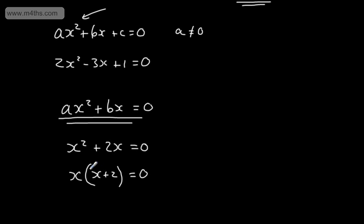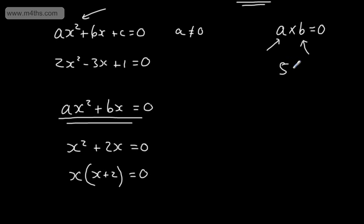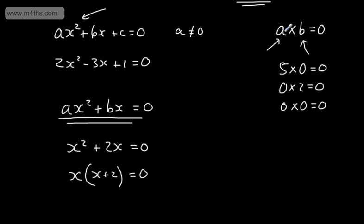If we consider that the product of these two is equal to 0 — if I have two numbers, let's say a and b, and a times b is equal to 0 — then either a must be equal to 0, b must be equal to 0, or they both must be equal to 0. For example, 5 times 0 gives 0, 0 times 2 gives 0, and 0 times 0 gives 0. So at least one of these factors is going to be equal to 0, and that's how we go ahead and solve.